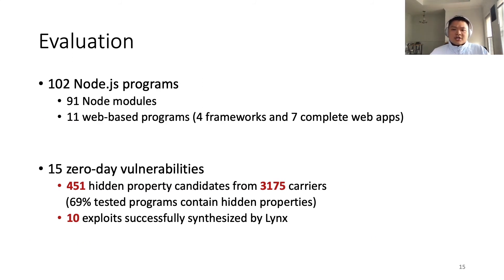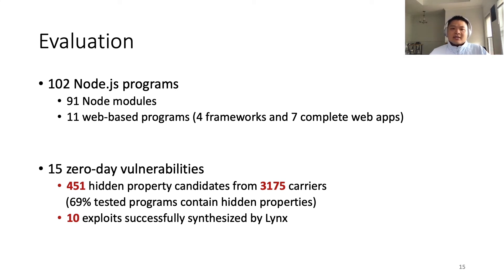During our research, we chose 102 widely used Node.js programs for evaluation. With LYNX, we tracked more than 3,000 property carriers and detected more than 400 hidden property candidates. In the end, we confirmed 15 zero-day vulnerabilities. With the help of symbolic execution, LYNX even synthesized 10 exploits automatically.